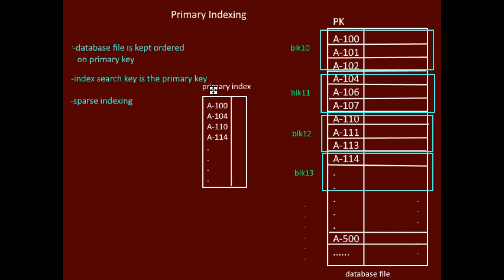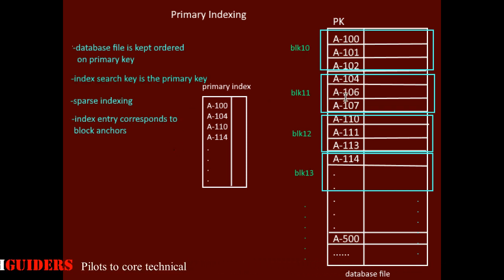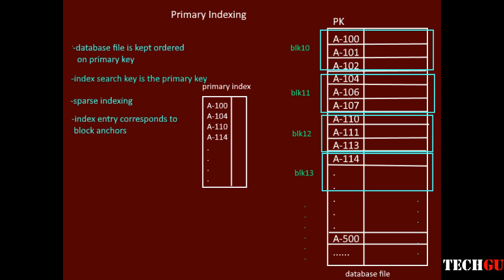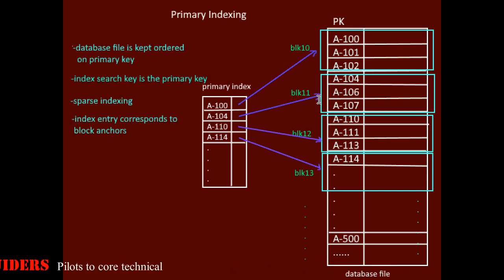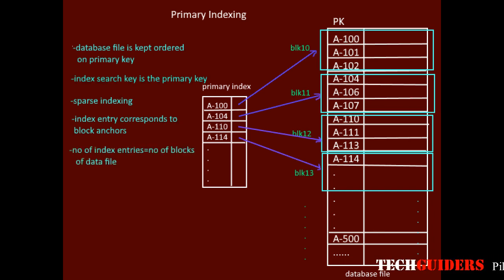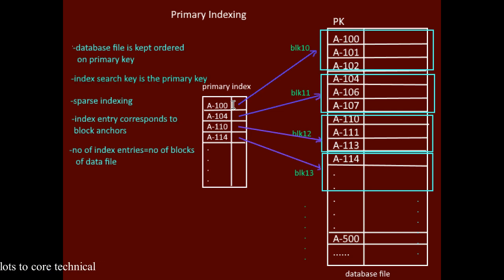In sparse primary indexing, the index entry is created for the first record of every block. These first records of every block are called the anchor records, or block anchors. Each index entry corresponds to the block anchors and consists of the index search key and a block pointer pointing to the corresponding block. Hence, the number of index records equals the number of blocks required to keep the database file.